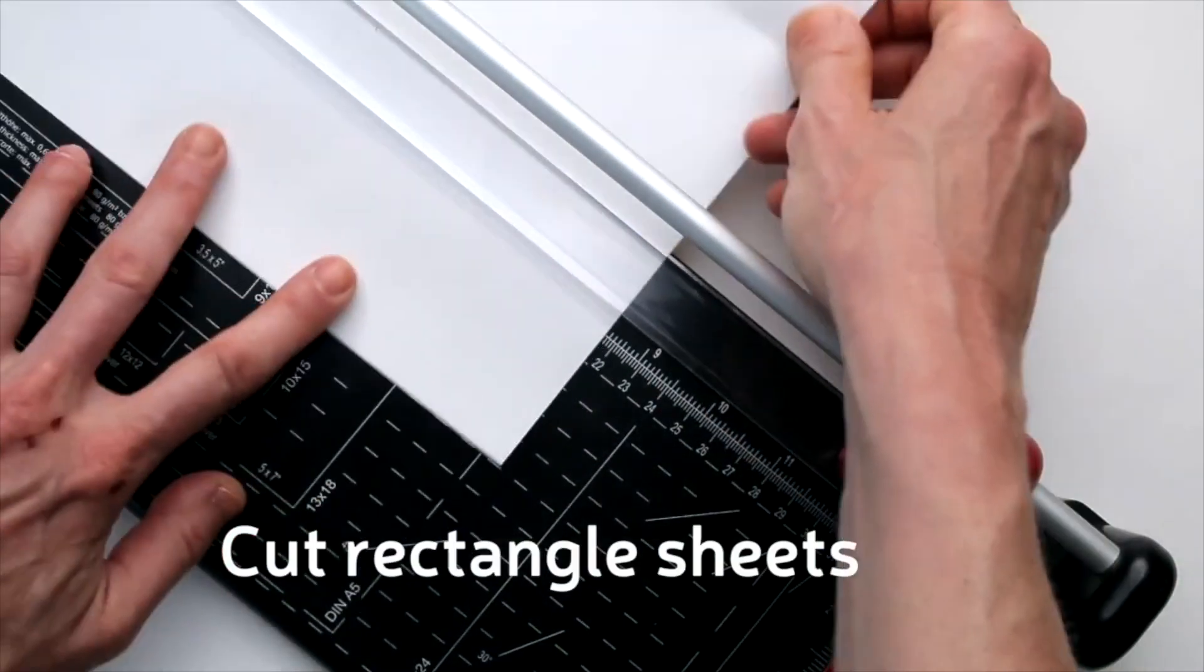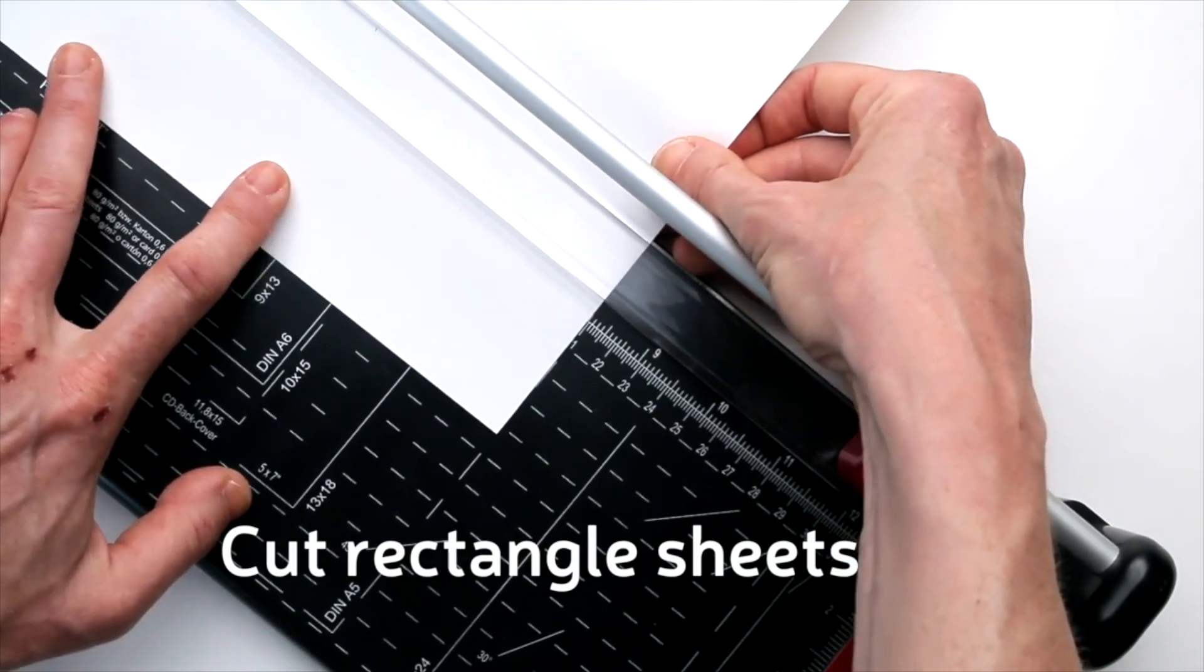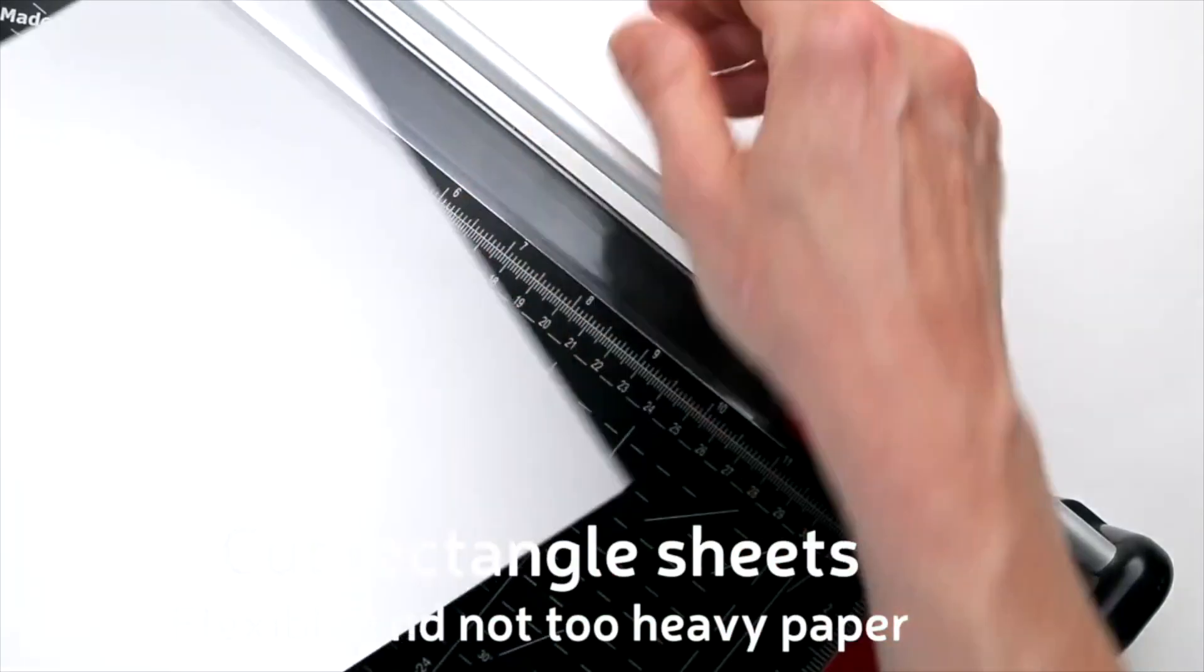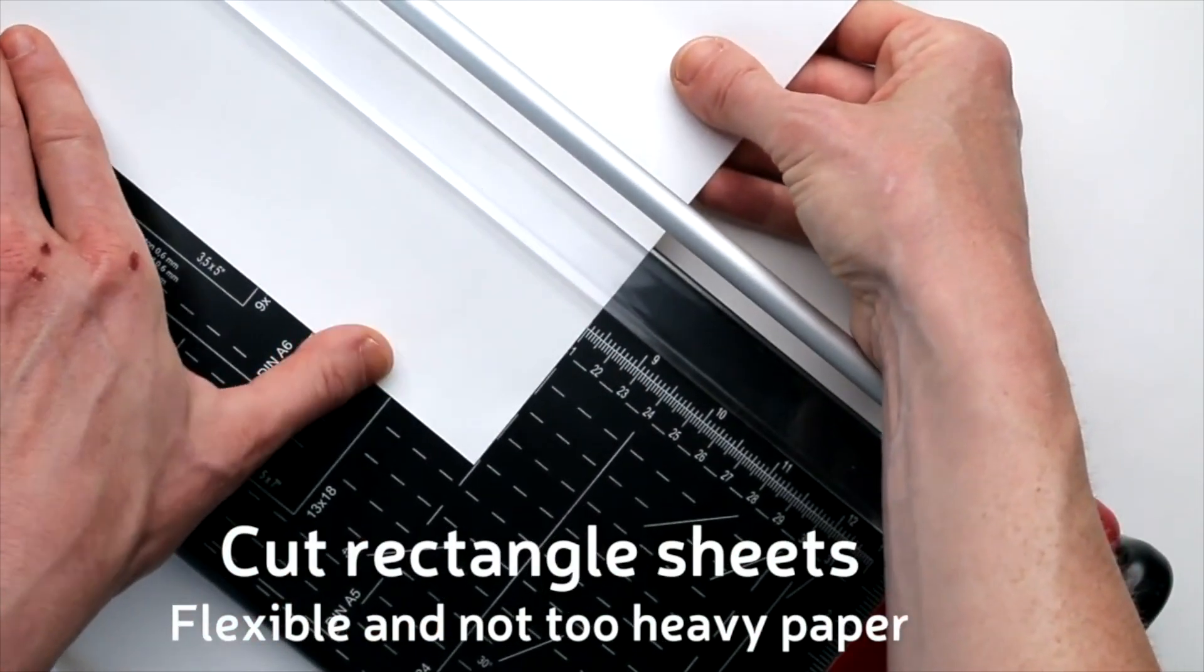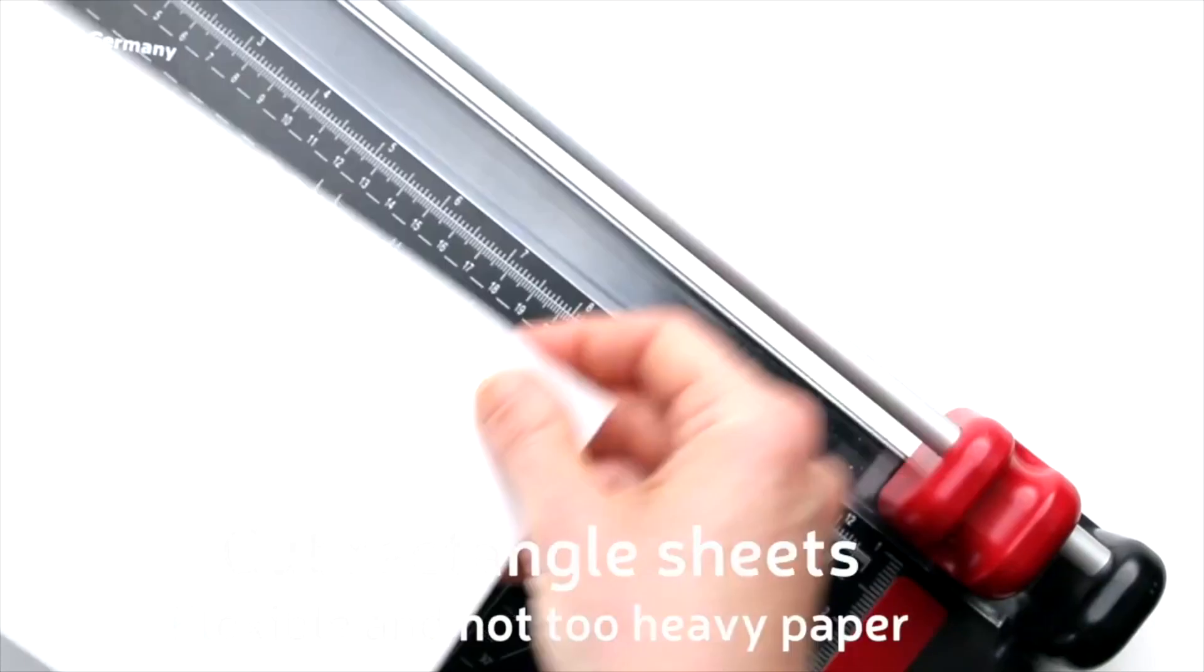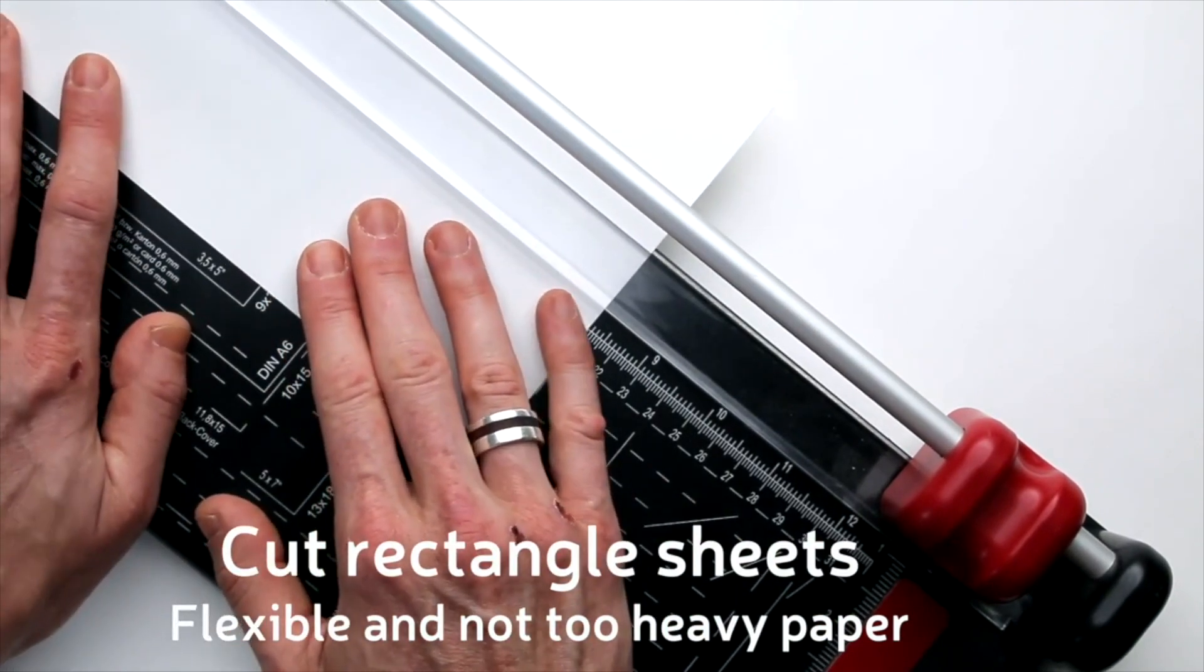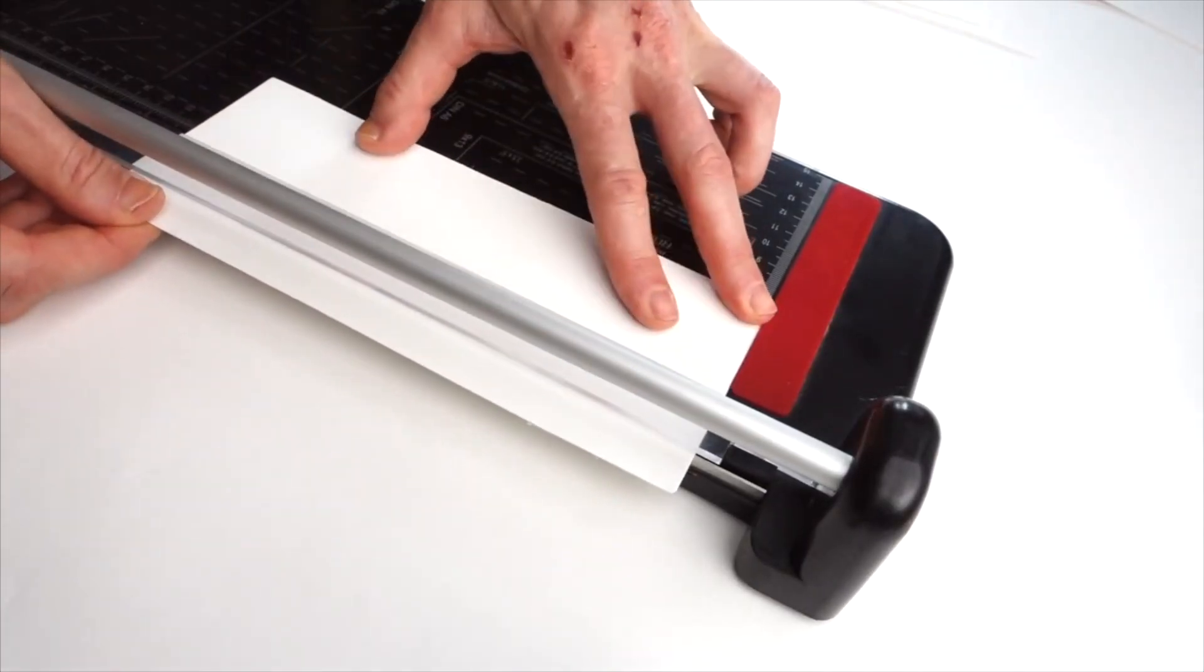You can use sheets of sketch paper or even simple printer paper. Make sure the paper is flexible and not too heavy. It has to be easy to flip, and also, when making the drawings, we'll be partly tracing from one drawing to the next, so you need to see through at least just a little bit. Cut your paper into rectangle sheets. You'll need about at least 20, depending on how elaborate you want your little animation to be.